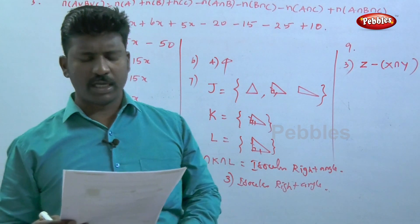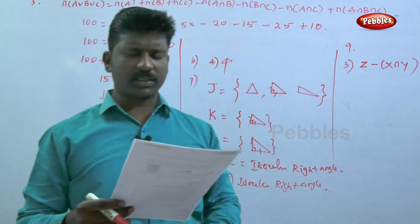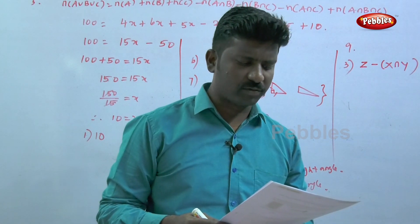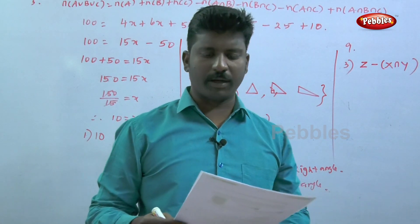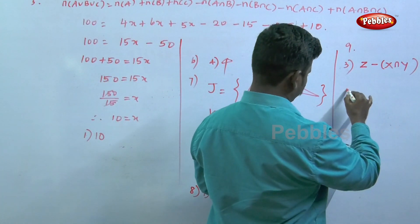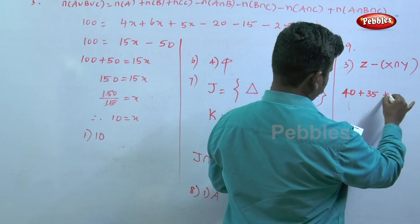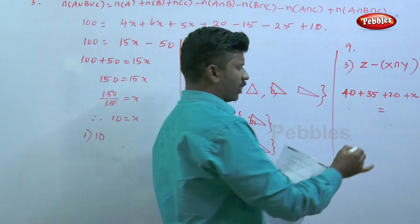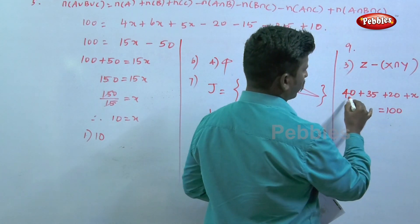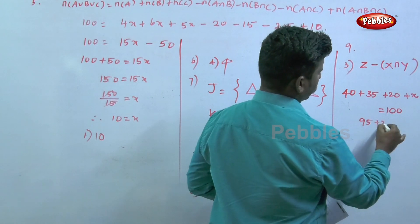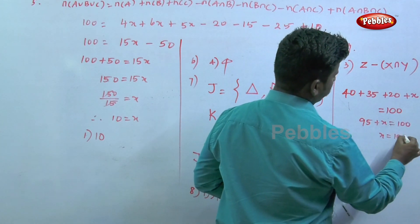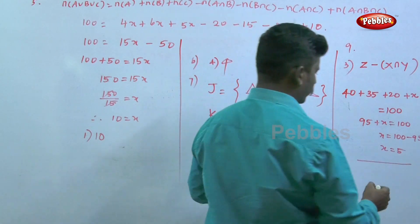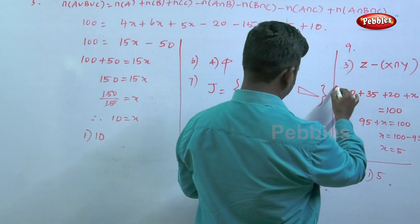The tenth question: in a city, 40% of people like only one fruit, 35% like only two fruits, and 20% like all three fruits. Find the percentage who do not like any fruit. Total accounted: 40 + 35 + 20 = 95%. So the percentage who do not like any fruit is 100 - 95 = 5%. Option one is correct; the answer is 5.